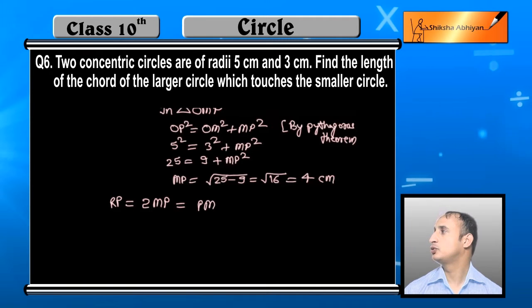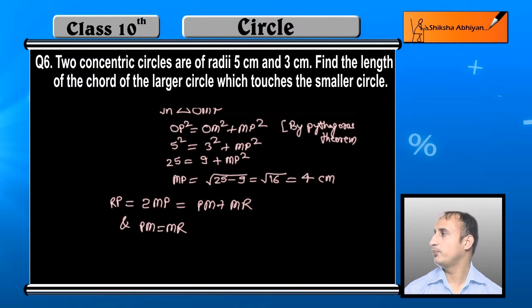RP is 2 times MP. That is PM plus MR. PM is equal to MR because they are equal.